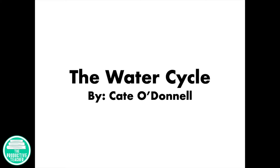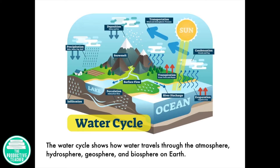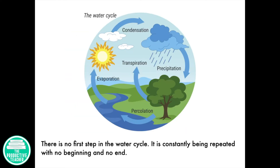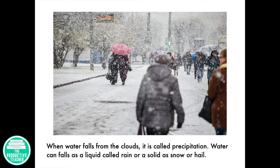The Water Cycle by Kate O'Donnell. The water cycle shows how water travels through the atmosphere, hydrosphere, geosphere, and biosphere on Earth. Water can be found in all three states of matter on Earth. There is no first step in the water cycle — it is constantly being repeated, with no beginning and no end.